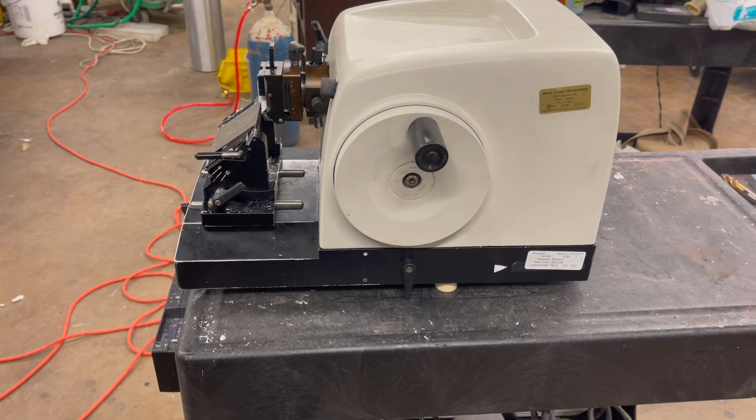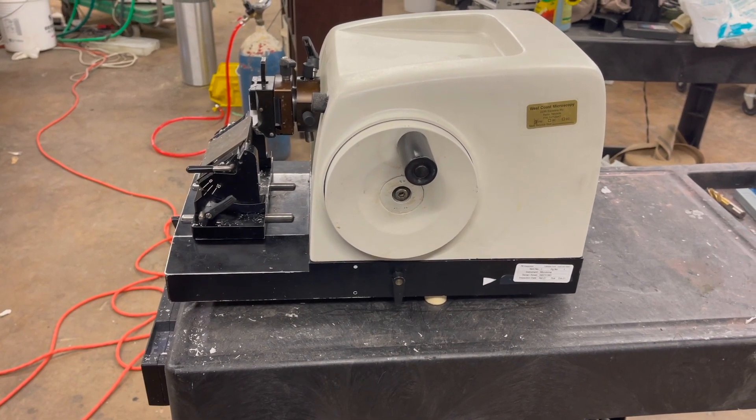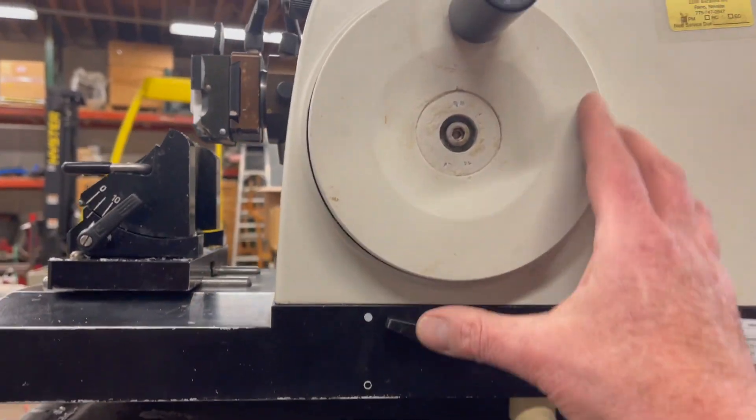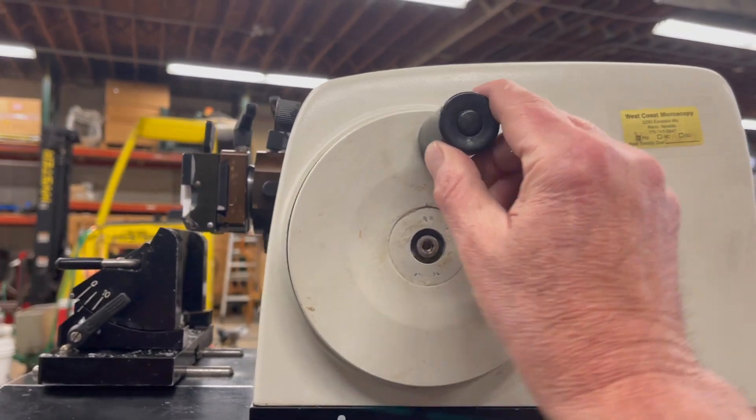Anyway, some older Leica Microtomes, and maybe some current ones, although I don't think so, have two hand wheel locks. So everyone knows about the lock down here, where if you lock this handle, you won't be able to turn the hand wheel.